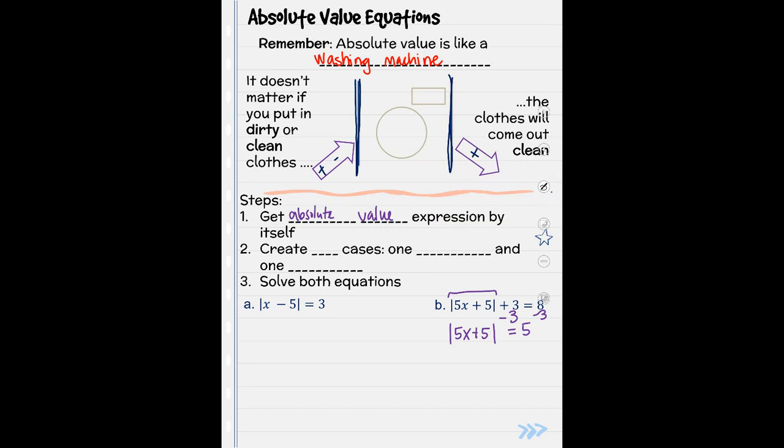All right, second step, we want to create two cases. One positive and one negative. So two cases here. So I'm going to take my 5x plus 5 equals, so one positive. And 5x plus 5, one negative.